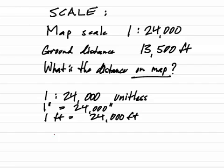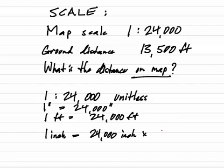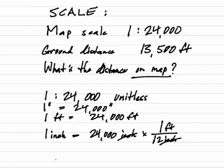How about we make a quick conversion? We can say 1 inch equals 24,000 inches times a conversion factor — we want inches to cancel, so we put 12 inches in the bottom, and that's 1 foot. Inches cancel, leaving feet. This readily converts to 1 inch equals 2,000 feet.